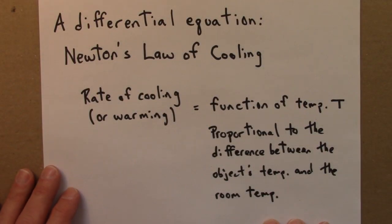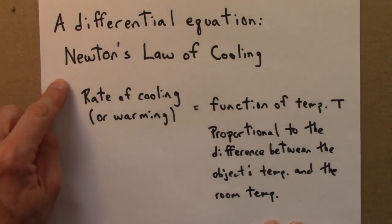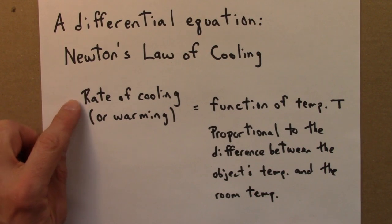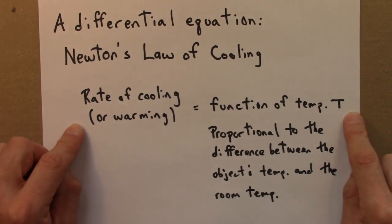The differential equation I mentioned last night is known as Newton's Law of Cooling. And here's what this equation says in words. It says that the rate of cooling or warming, either way, is some function of the temperature T, the temperature of the object that's warming or cooling.